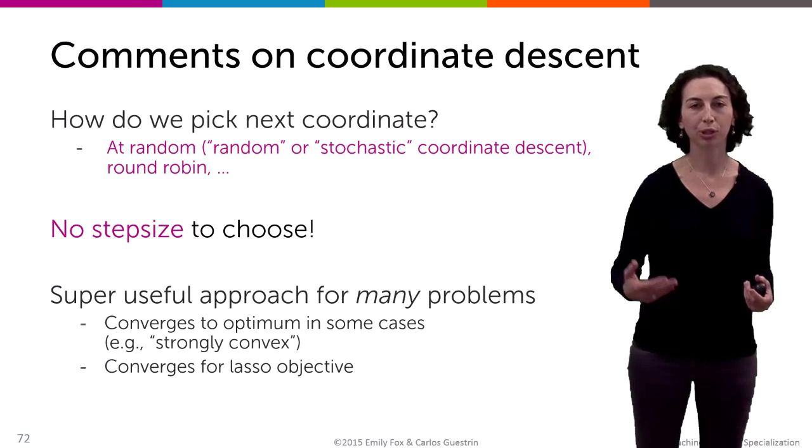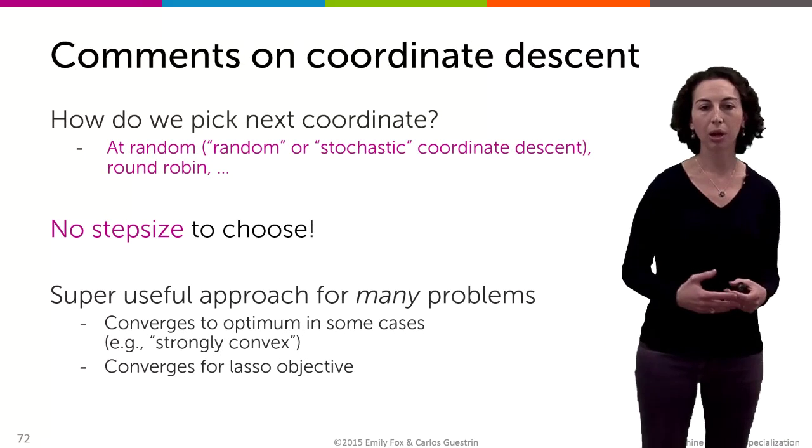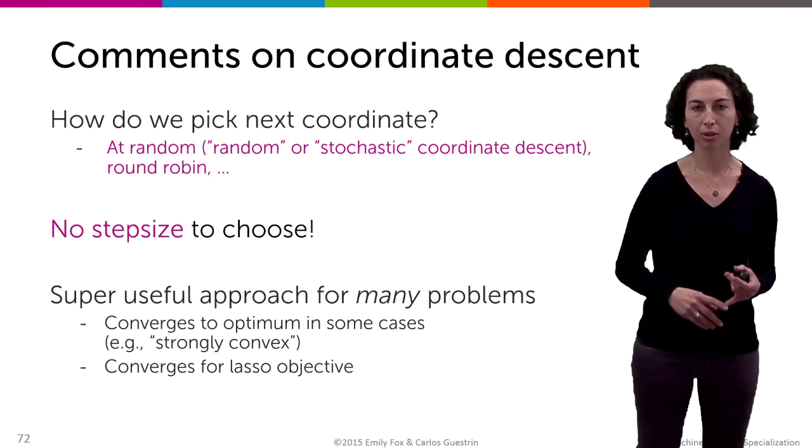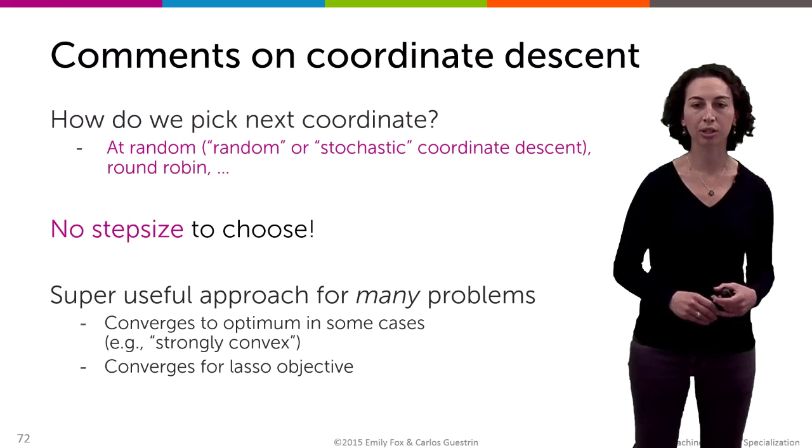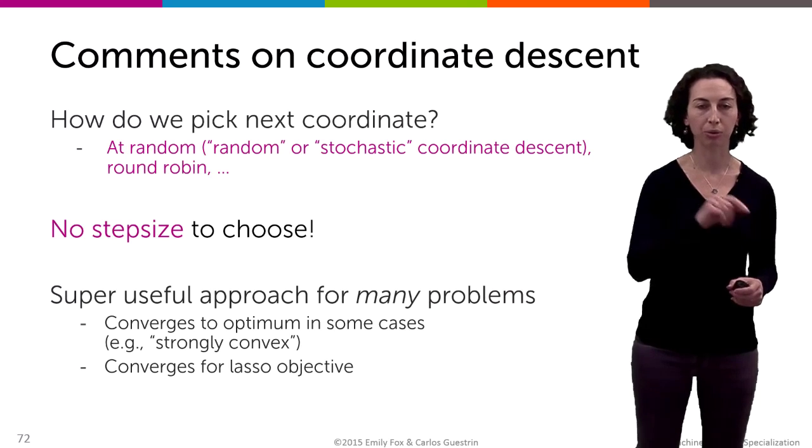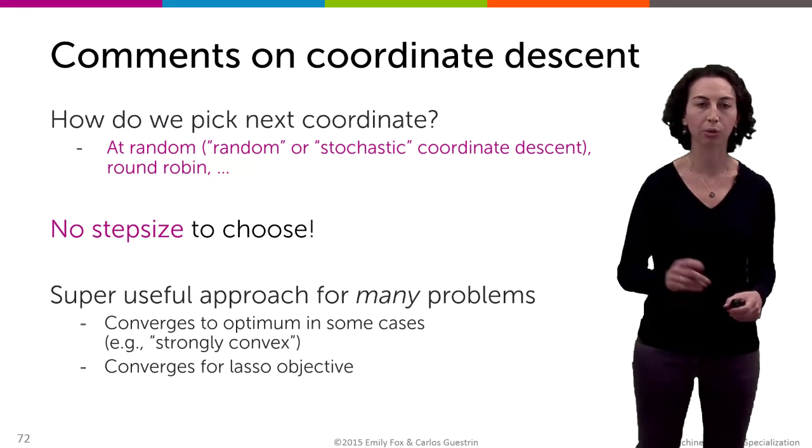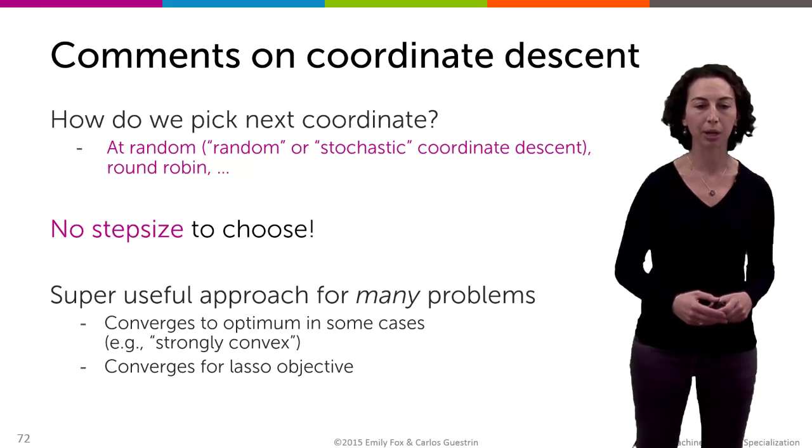So how are we going to pick which coordinate to optimize next? Well, there are a couple choices. One is to just choose coordinates randomly. This is called either random or stochastic coordinate descent. Another option is round robin, where I just cycle through 0, 1, 2, 3, all the way up to D, and then cycle through again. And there are other choices you can make as well.